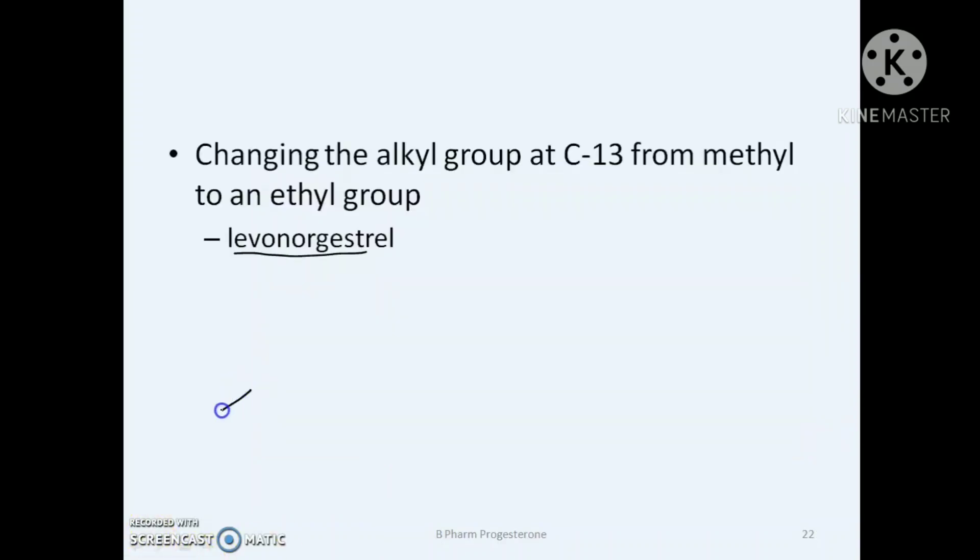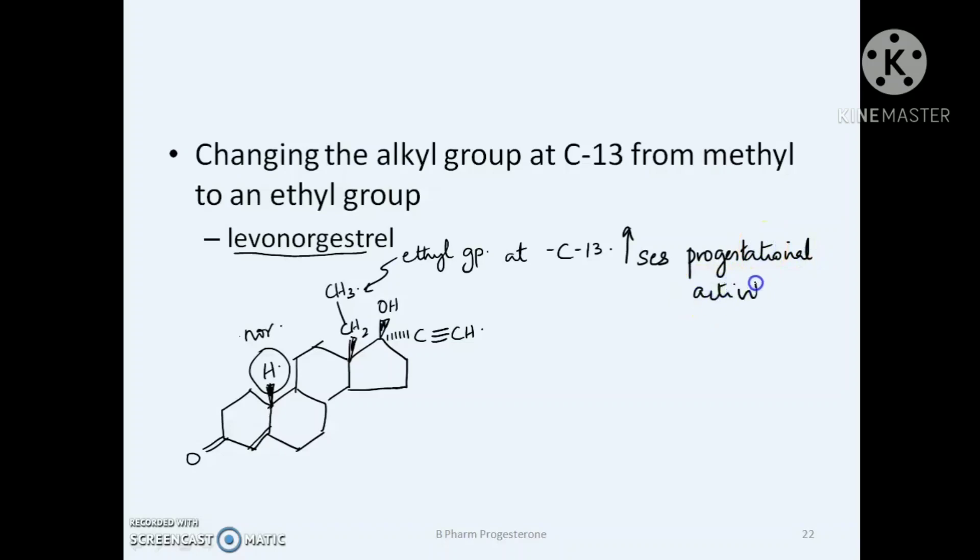The next 19-nor testosterone derivative, an important one, is levonorgestrel. Here the alkyl group at the C13 is changed to an ethyl group to form levonorgestrel. This modification in levonorgestrel reduces the androgenic activity of testosterone and increases the progestational activity. Levonorgestrel is very commonly used as an oral contraceptive pill.